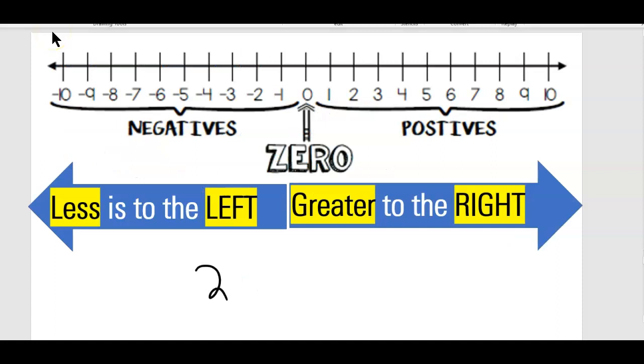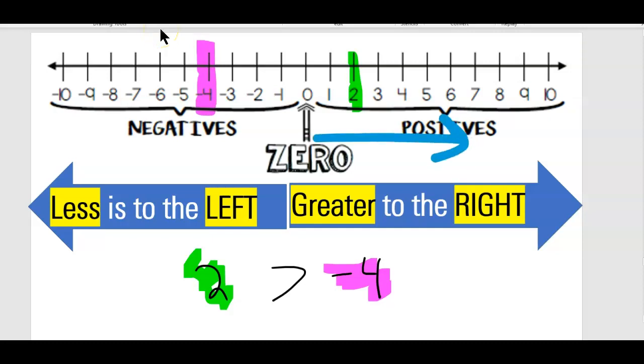Is two greater than negative four? Where's the two? Where's the two? Right here. Where's negative four? Where's negative four? Is it kind of obvious to say which one's greater? Because the more you go this way, the greater it is. The more you go this way, the less it is. Yeah? Okay. So two is greater than negative four.